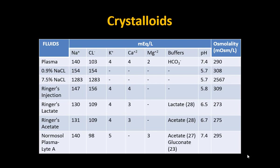The most commonly used crystalloid is normal saline, also known as physiological saline. It has 154 mEq/L of sodium and 154 mEq/L of chloride. It does not have any other electrolytes and no buffers. The pH is 5.7, which is acidic, and the osmolarity is 308, making it hyperosmolar.